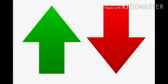Babies, these are arrows — green and red color. Tell me, green color arrow is up or down? Up. Yes. And red arrow is down.